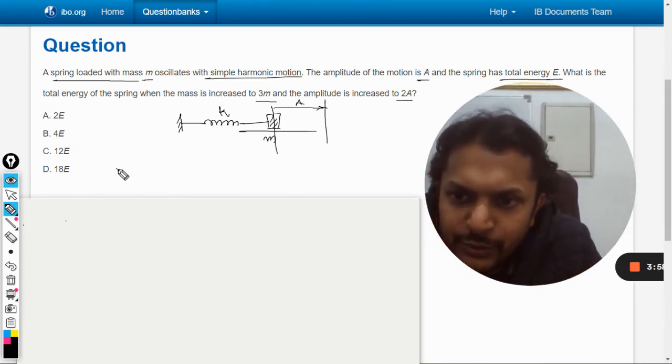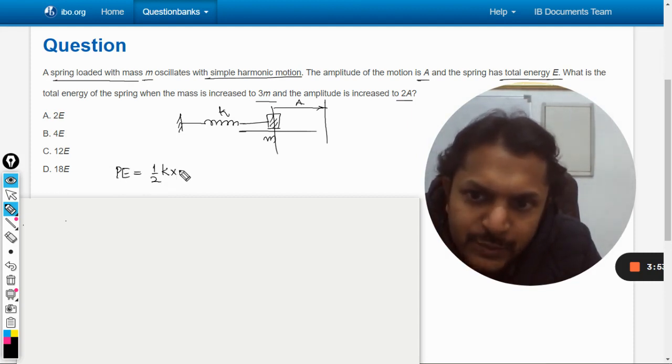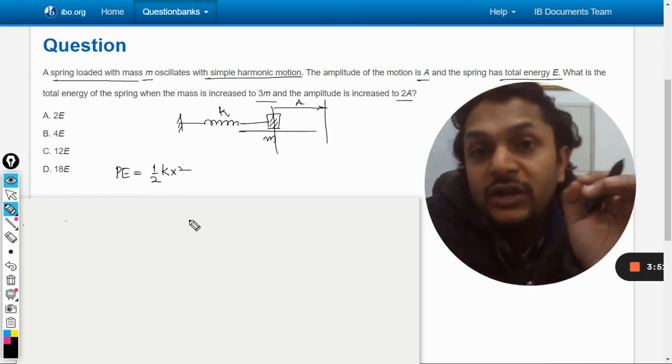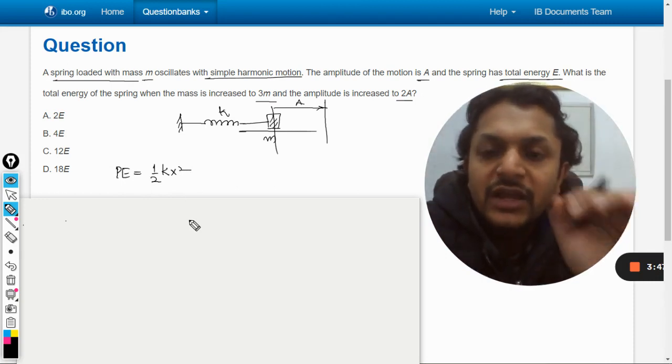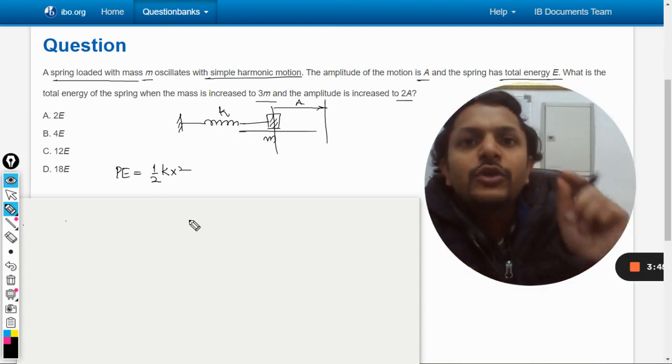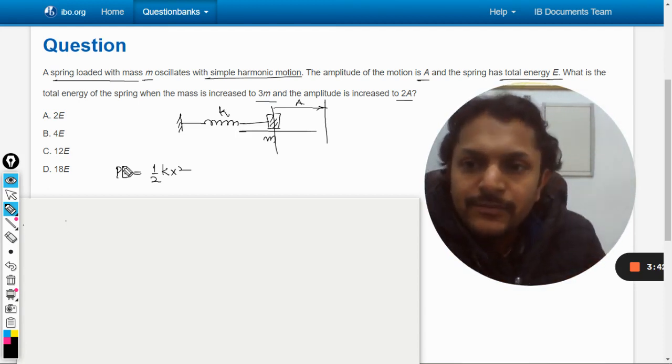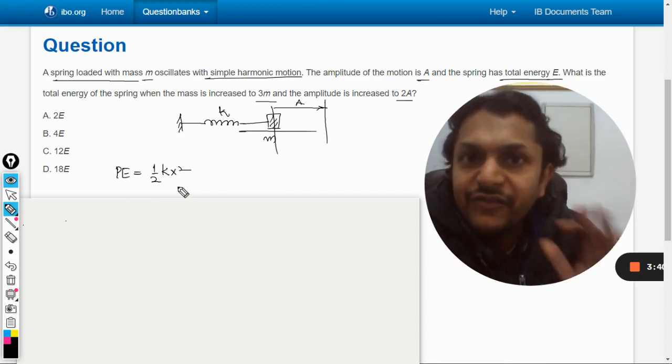So I am going to use this formula for the potential energy. The elastic potential energy stored in a spring is given by (1/2)kx², where x is the extension or the compression in the spring. This formula is given in your formula booklet, I think in topic 4.